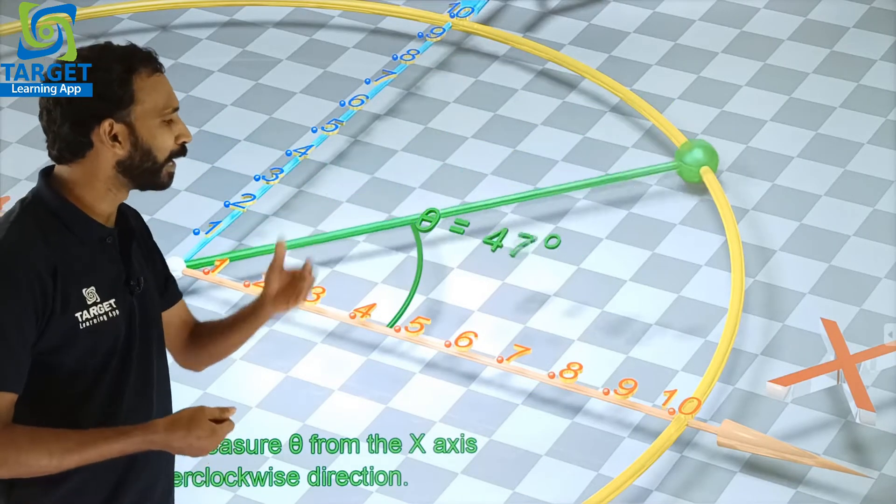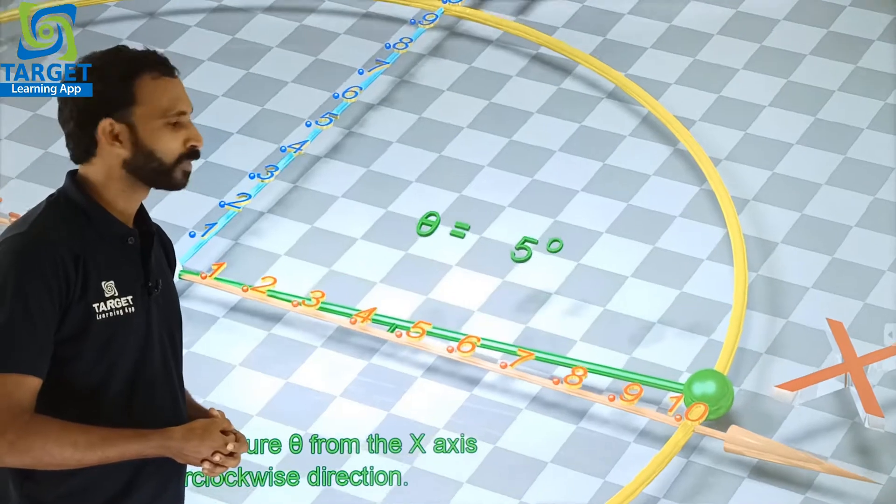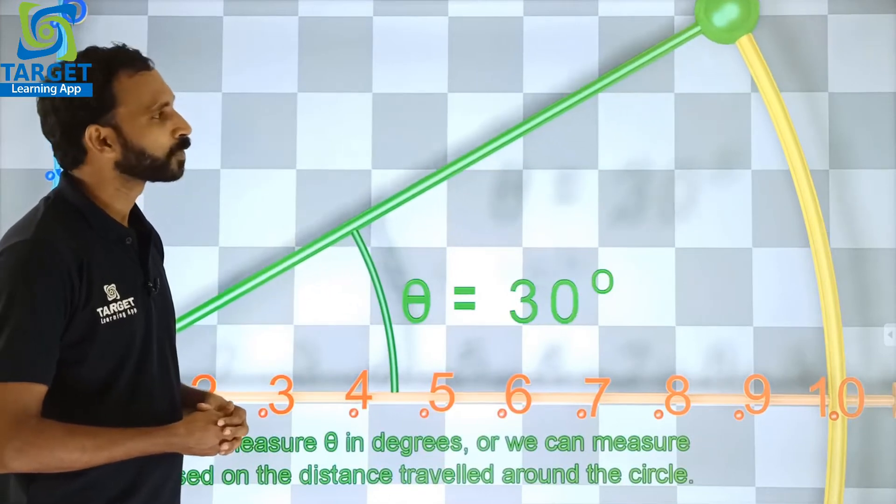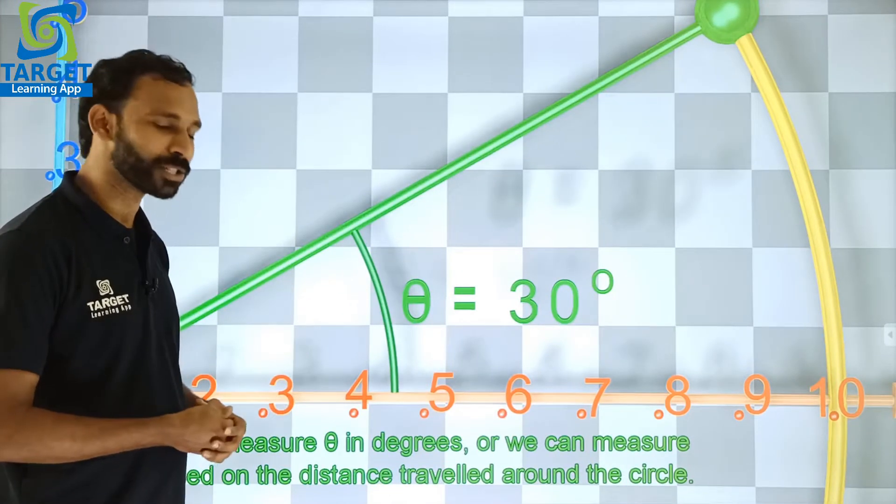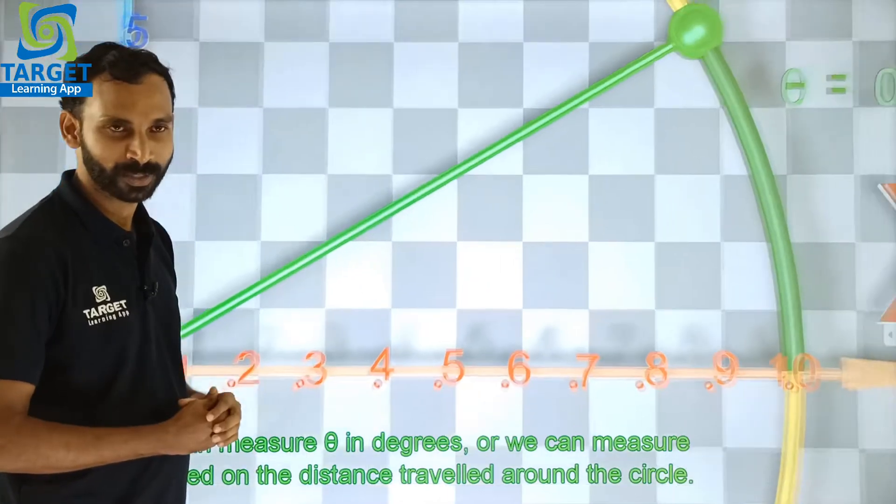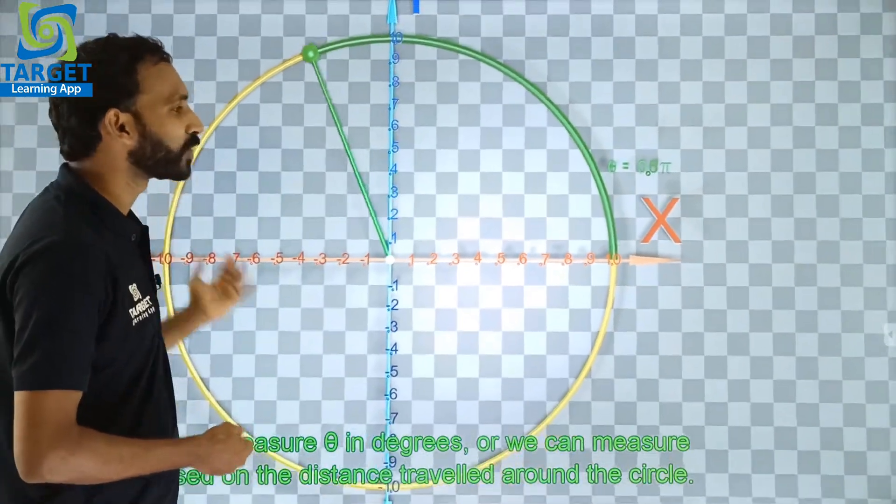Look at the different values of theta. We can measure theta, the angle theta in degrees or we can measure it based on the distance travelled around the circle. That is we will call the radian measure.